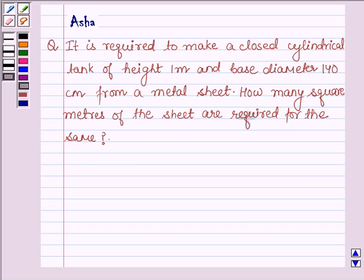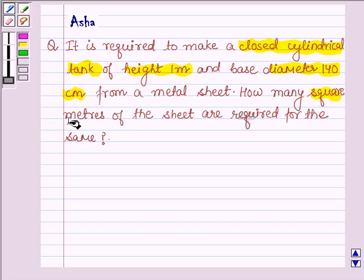Hello and welcome to the session. The question says it is required to make a closed cylindrical tank of height 1 m and base diameter 140 cm from a metal sheet. How many square meters of sheet are required for the same?